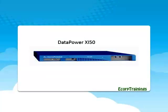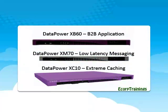Data Power XI50 is the most popular of all models because of its integration capabilities. It can be placed in the DMZ as well as the backend private network and does all the capabilities of all the other models. Additional options include WebSphere MQ Client, WebSphere Java Message Service, Tibco Enterprise Message Service, IBM IMS Connect Client, DB2 Integration, and Runtime Engine for non-XML processing.